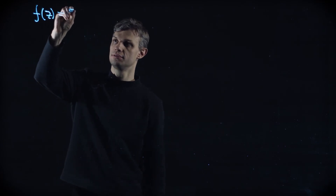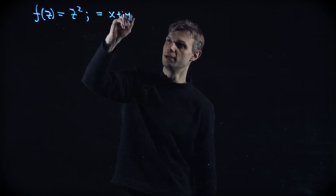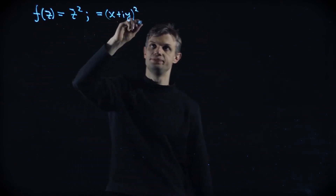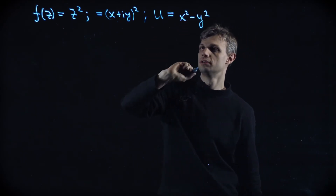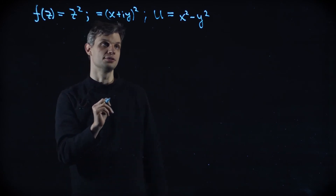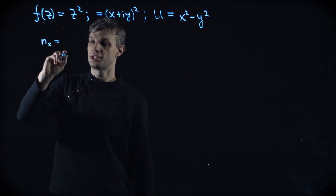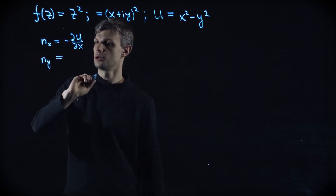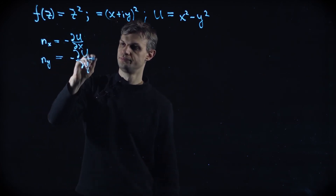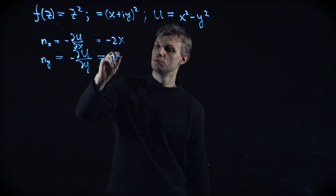To illustrate this idea, let's consider a simple example: the quadratic function f of z equals z squared, which equals (x + iy) squared. So the u function is x squared minus y squared. Let's figure out what the curves of steepest descent directions are.